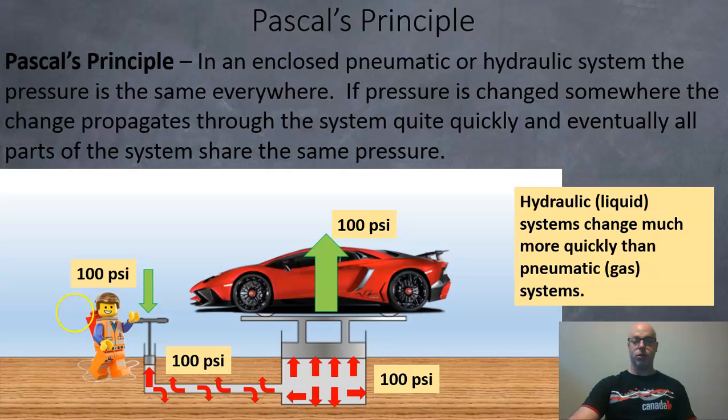For example if this worker exerts 100 pounds per square inch of pressure over on this side then that'll work its way through to be 100 psi here, 100 psi over there and here and also on the piston which would then lift the car.